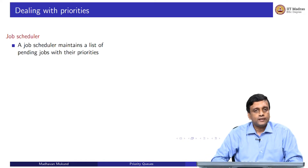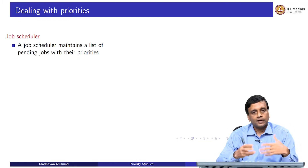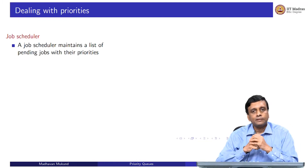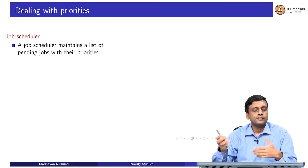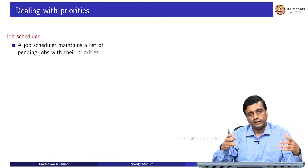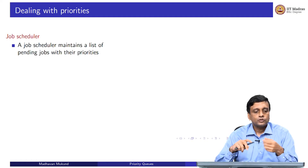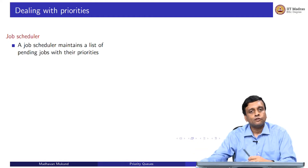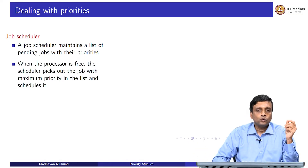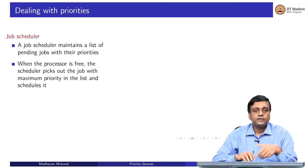Priorities happen all over the place. In a computer's operating system, there are a number of tasks which are running. If something very high priority comes in, whatever is running has to be suspended and something else has to be taken in its place. This is done by something called a job scheduler, which keeps a list of tasks and has to decide at each unit, when it is allowed to switch tasks, which one to schedule next. The scheduler maintains a list of pending jobs, each with a priority. When the processor is free, the scheduler should pick the highest priority job and schedule it.